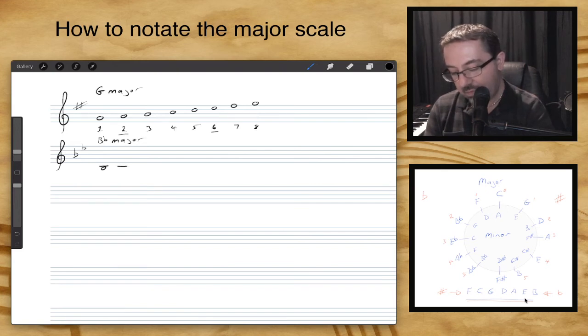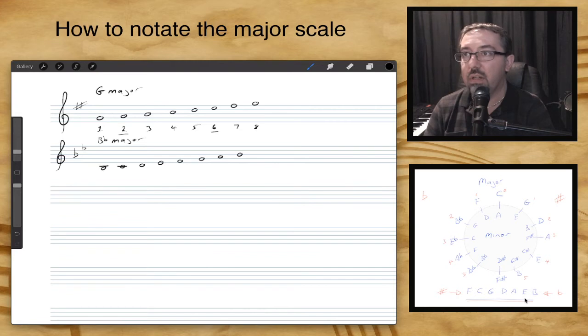then C, D, E, F, G, A, B. And there we have it. So we've got our B flat major scale with a key signature.